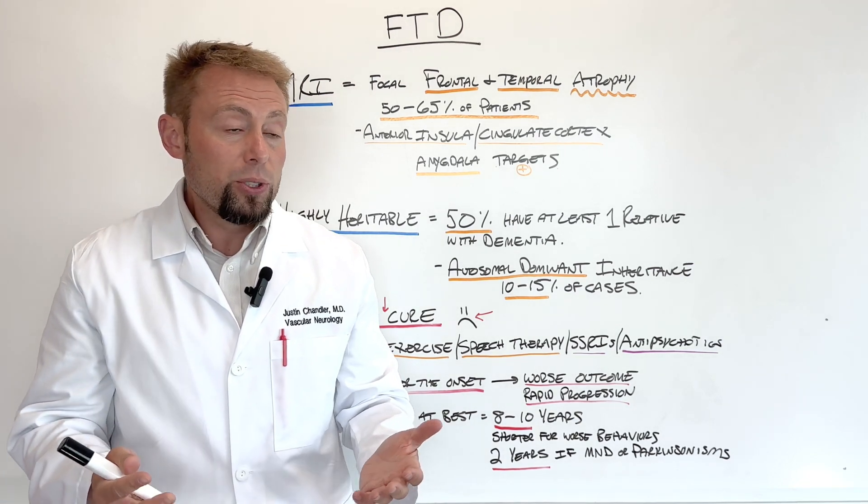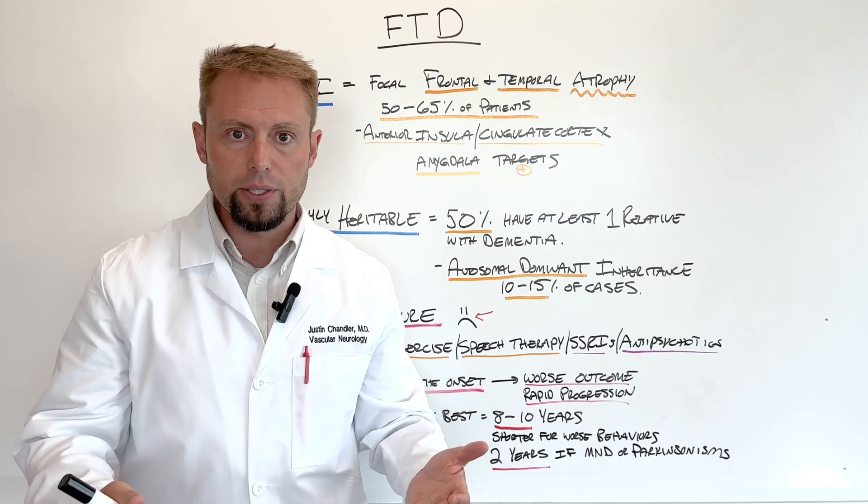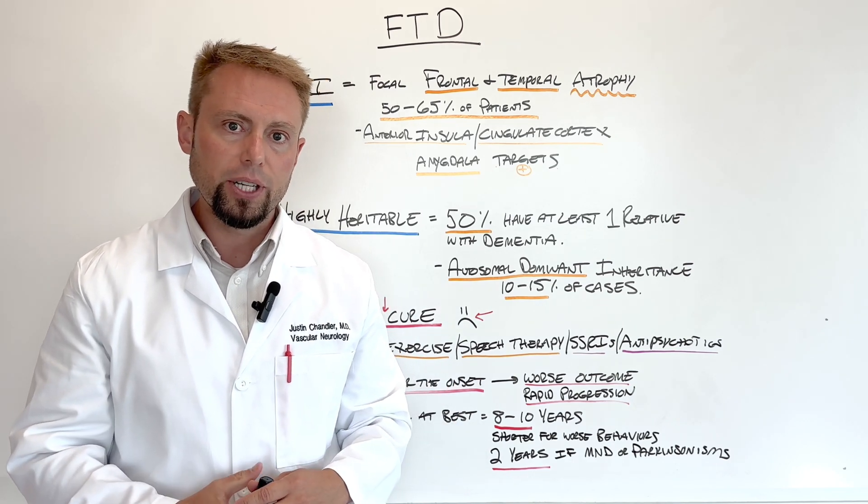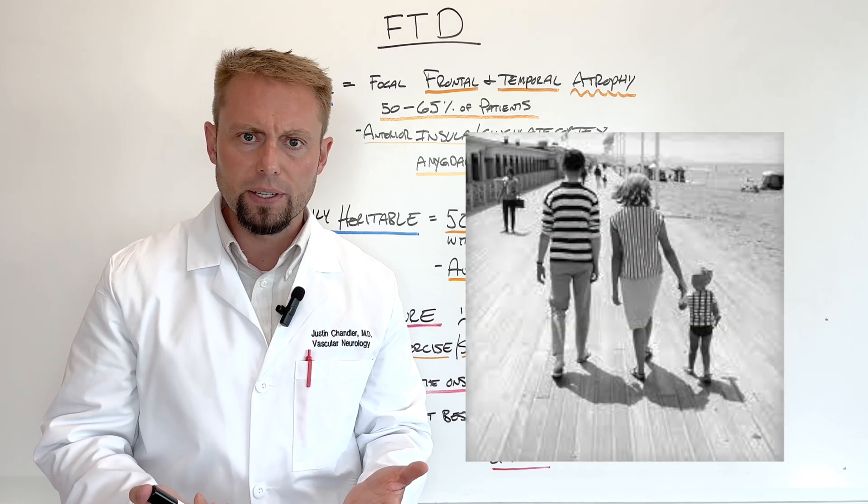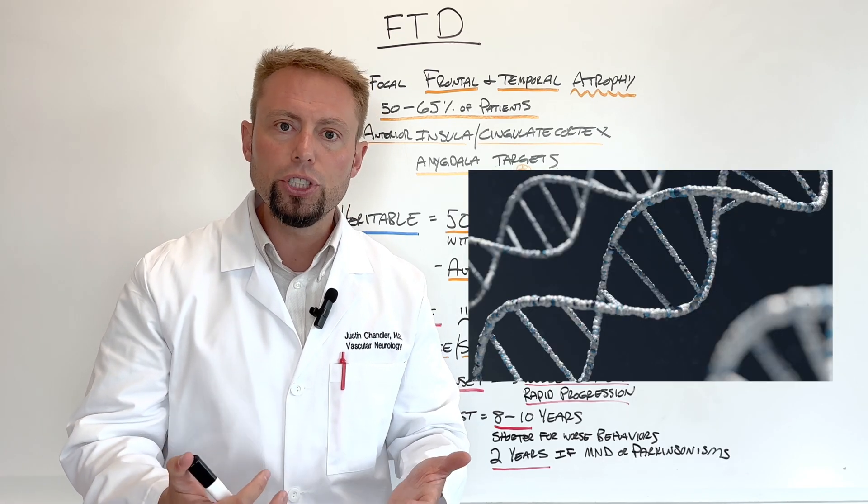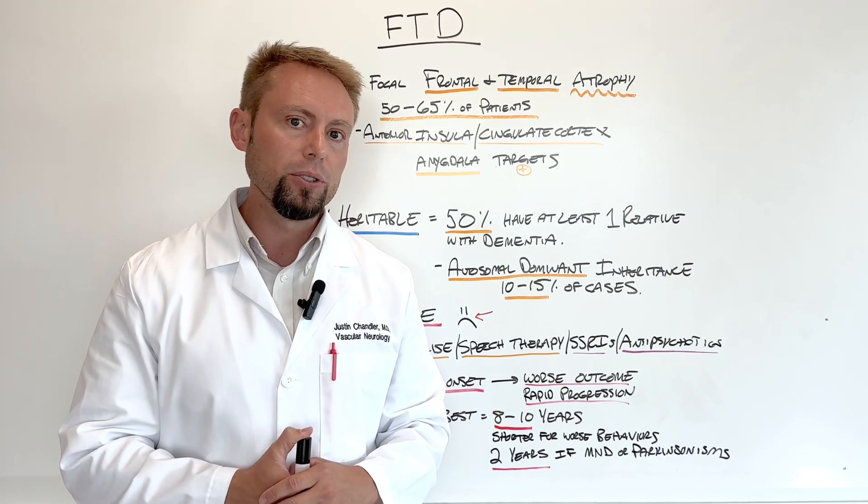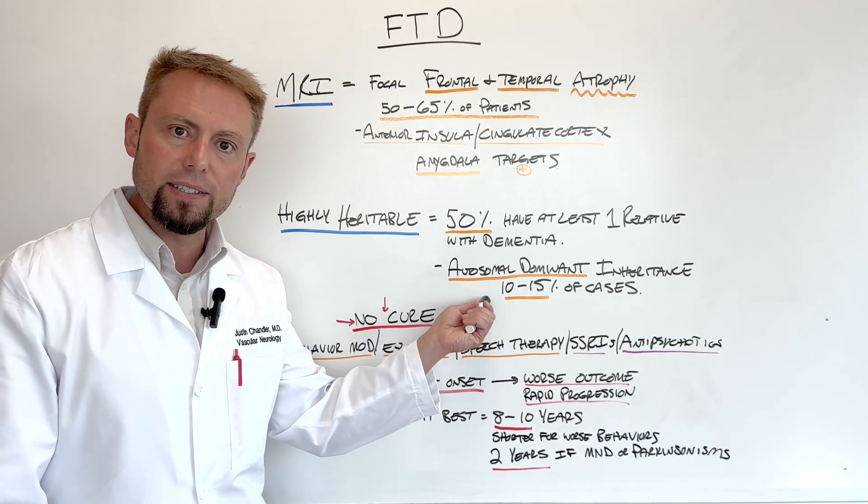And one of the things that's the most concerning probably for people who are family members or friends or loved ones of those that have frontal temporal dementia is how heritable this is. Meaning you can inherit genes that put you at a significantly increased risk of developing frontal temporal dementia yourself. In 10 to 15% of the cases, frontal temporal dementia is inherited in an autosomal dominant pattern.